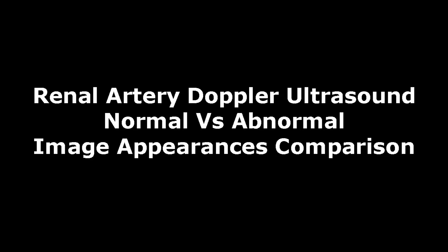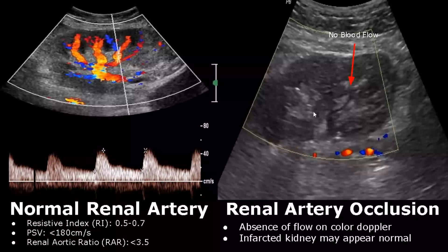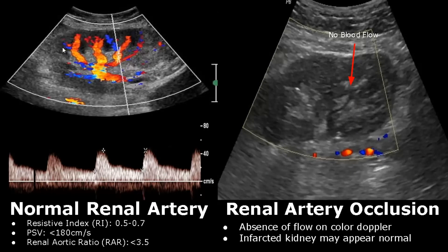Hello everyone, this is Dr. Sam and this video is about Renal Artery Doppler Ultrasound. By applying color Doppler while scanning the kidney, we can find the renal artery and its branches. The reddish color means blood flow is towards the probe, so blood is flowing towards the kidney, which means it is the renal artery.